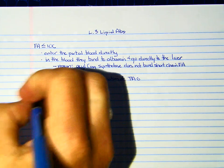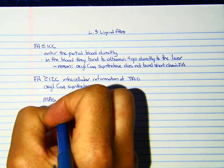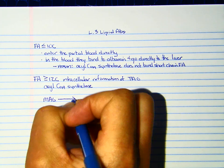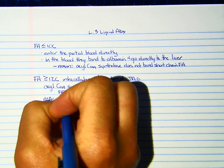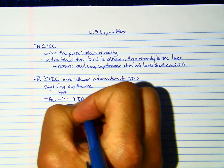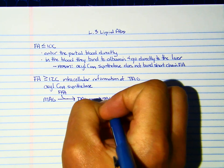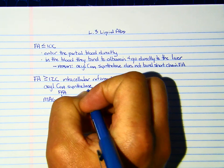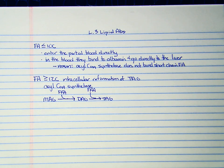So what's happening is we have MAG. We're going to add a free fatty acid, and that makes DAG. And then we're going to add another free fatty acid, and that produces TAG. And the enzyme catalyzing this is ACOCOA synthetase. So we have reformed TAG inside of our enterocyte.